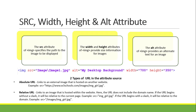The next attributes are src, width, height, and alt — commonly used with the image tag. The src attribute specifies the path to the image to be displayed. The width and height attributes provide size information for the image. The alt attribute provides alternate text for an image. Inside the image tag, we place src equal to the URL or path where the image is located, then alt equal to a description. Width and height are used to manipulate the size of the image.